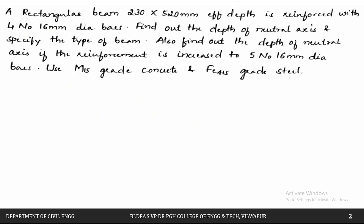The next part also asks us to find the depth of the neutral axis if the reinforcement is increased to 5 bars of 16 mm diameter. So first with 4 bars of 16 mm diameter, we find the neutral axis depth and beam type, and then with 5 bars we find the new neutral axis depth.